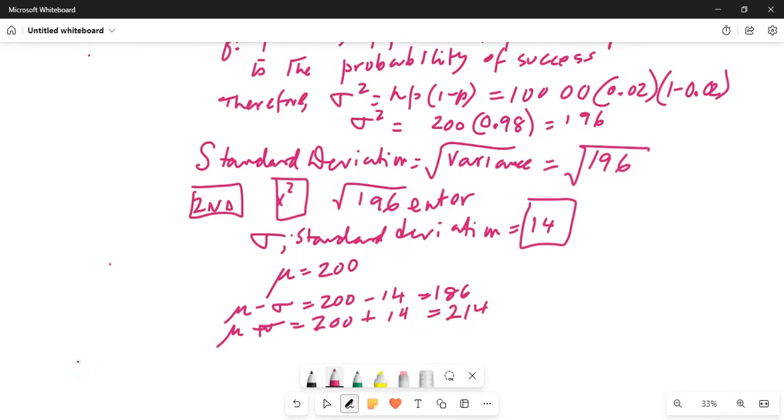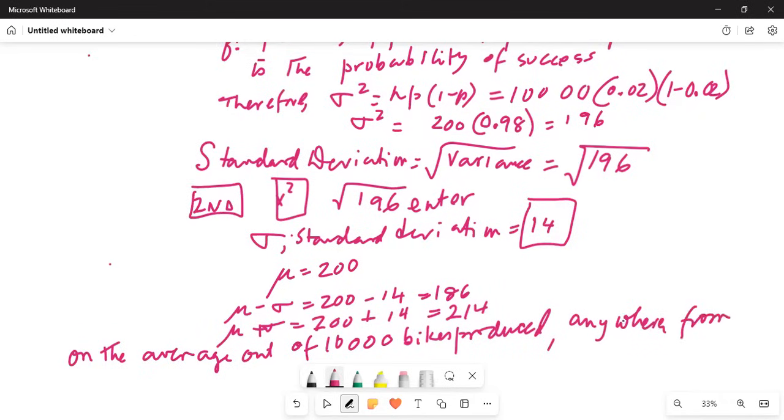On the average, out of 10,000 bikes produced, anywhere from 186 to 214 bikes will be defective.